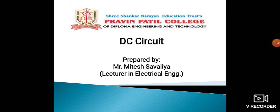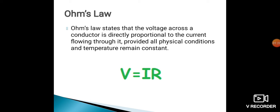In unit number 1, we have seen there are two types of current available — one is AC current, whereas the other is DC current. So, how a circuit behaves when it is supplied with DC current and how it behaves when supplied with AC current. In this unit, we are going to learn about the behaviour of a circuit under DC supply. We will start with the first point of unit number 2, that is Ohm's law.